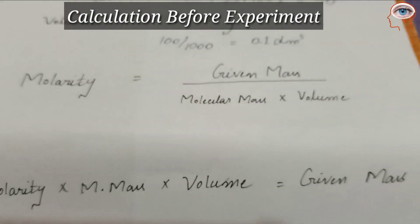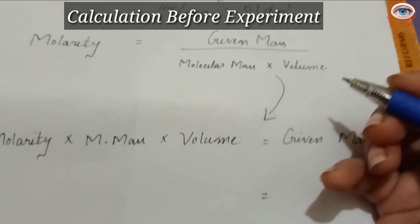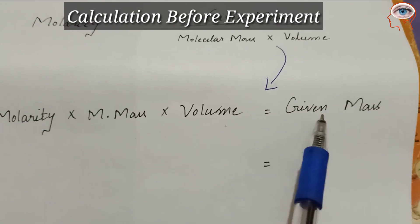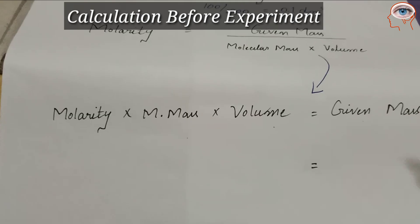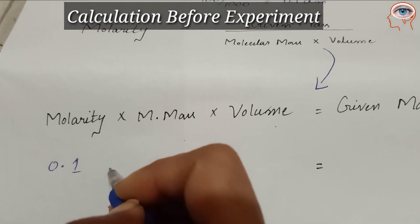We will rearrange this formula to get molarity times molecular mass times volume equals given mass. Now one by one we will put the values of each.